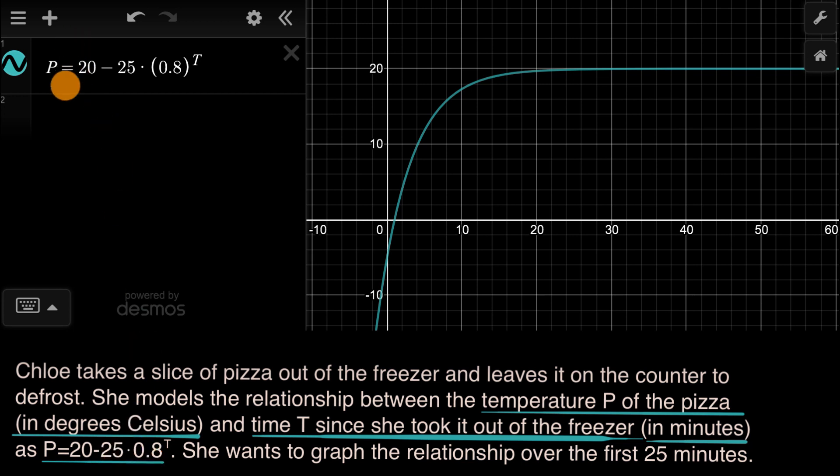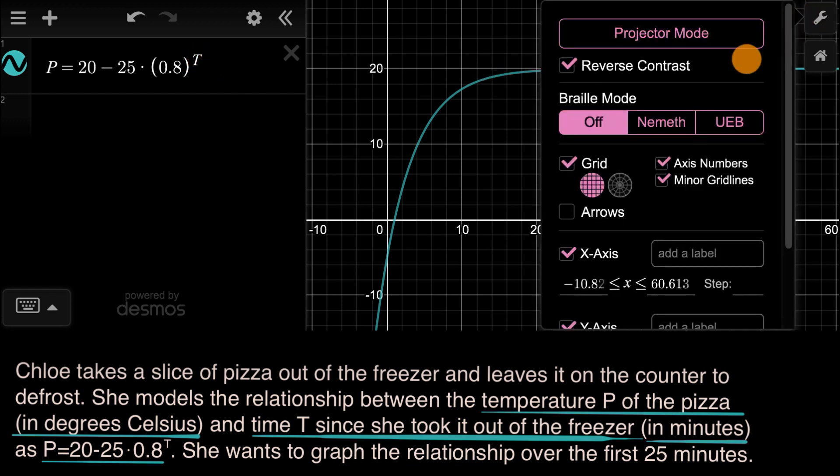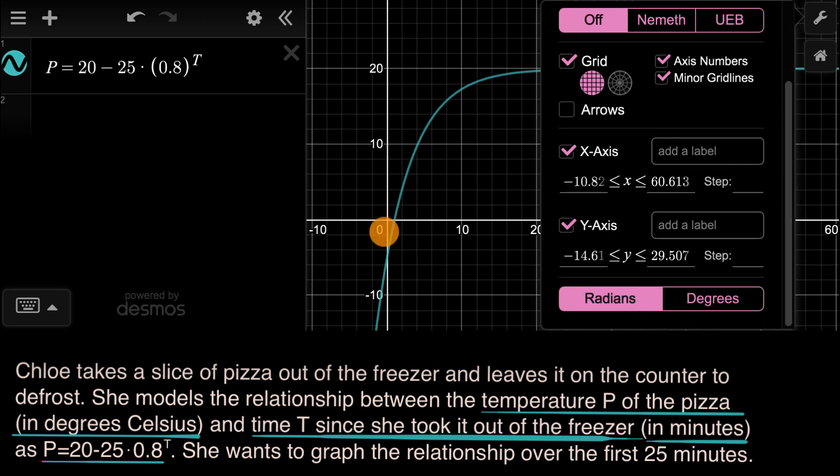Now remember, this is modeling the temperature of our pizza as a function of time. So to help us remember that, let's put in some labels for our axes. In graph settings, if I go down here to our X axis—our X axis is really the T axis, that's our independent variable.